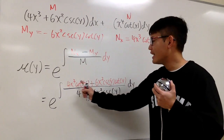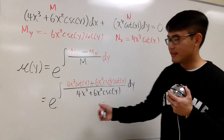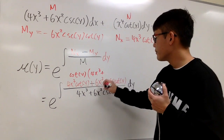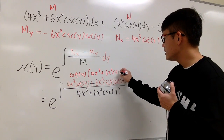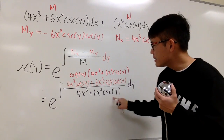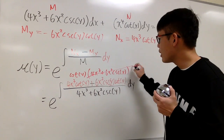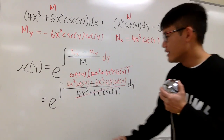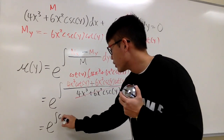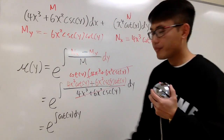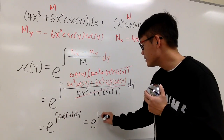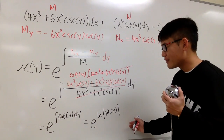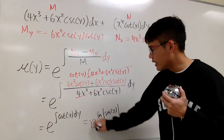After cancellation, what's left is just cotangent y — an expression in terms of y only. So this simplifies to e to the power of the integral of cotangent y dy. The integral of cotangent y is ln of the absolute value of sine of y. Then e and ln cancel each other, giving mu of y equals the absolute value of sine of y.